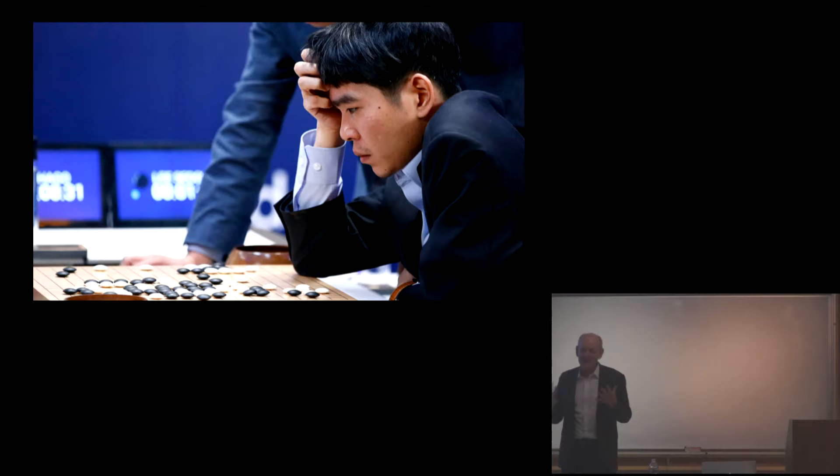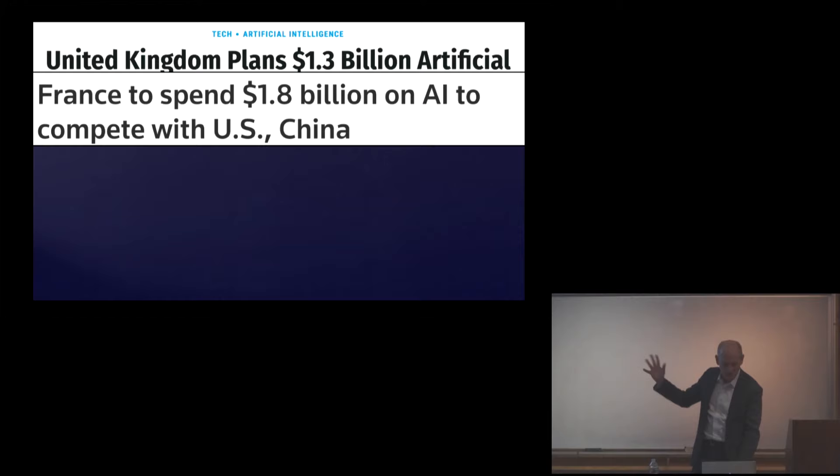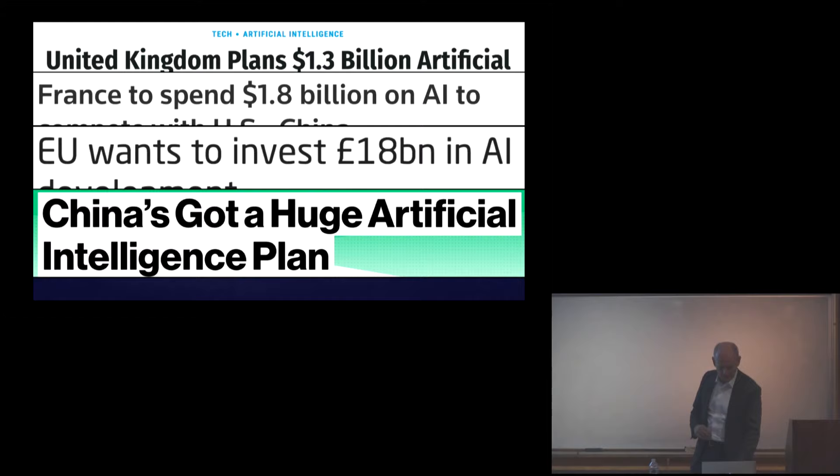So the media in particular have trouble distinguishing between million and billion. They often get them confused and now apparently the American government has also got that important distinction confused. So it's impossible to open a newspaper these days without seeing headlines about AI. It's a ridiculous time to be in this field.